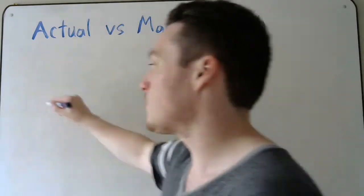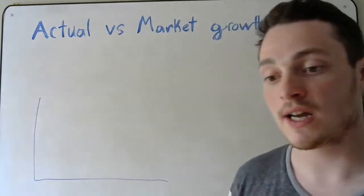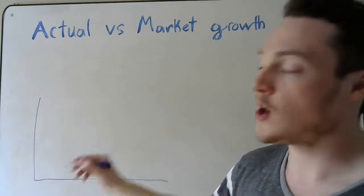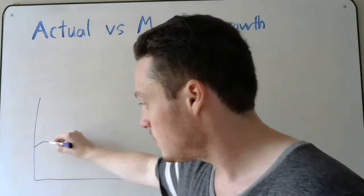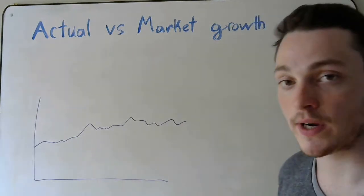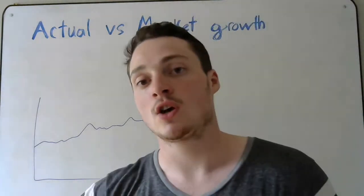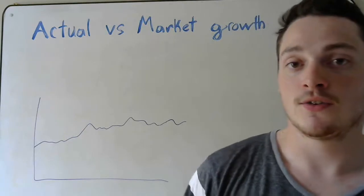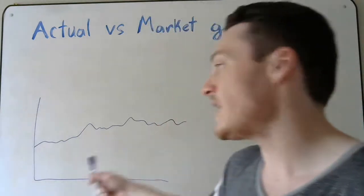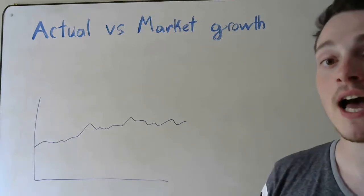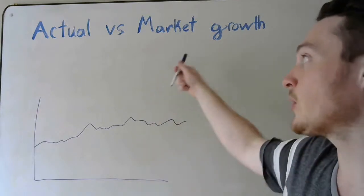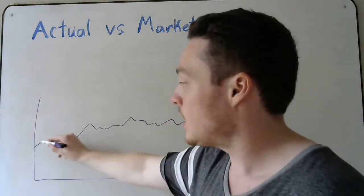I'm going to draw a graph. What we have here is the actual growth of the economy over time — the economy is gradually growing. That is what actual growth is. As companies expand, they're opening new stores and producing more stuff — that is actual growth.